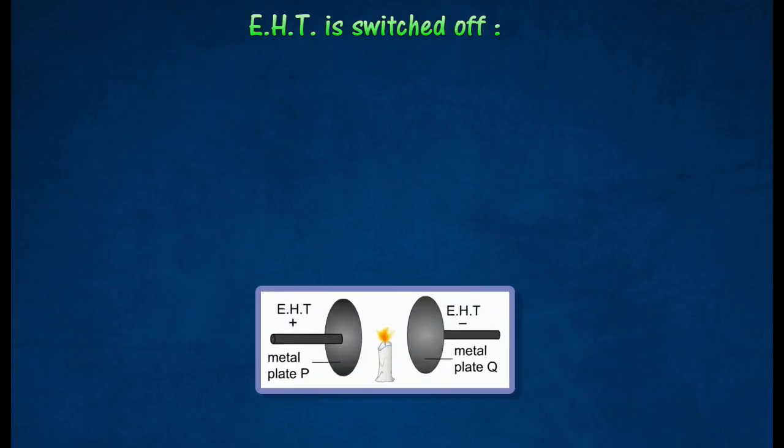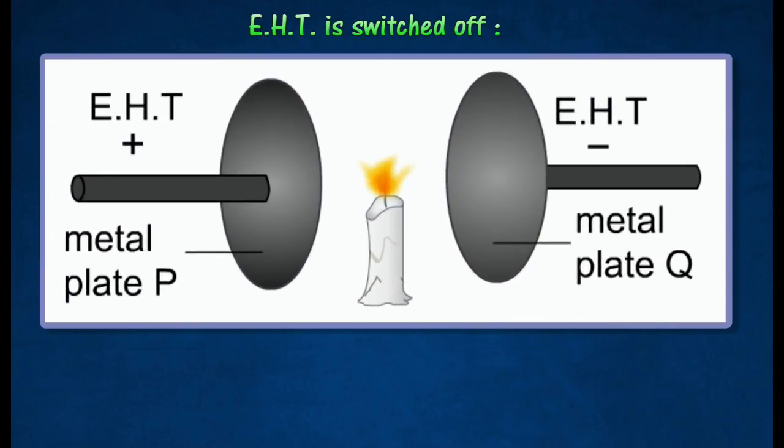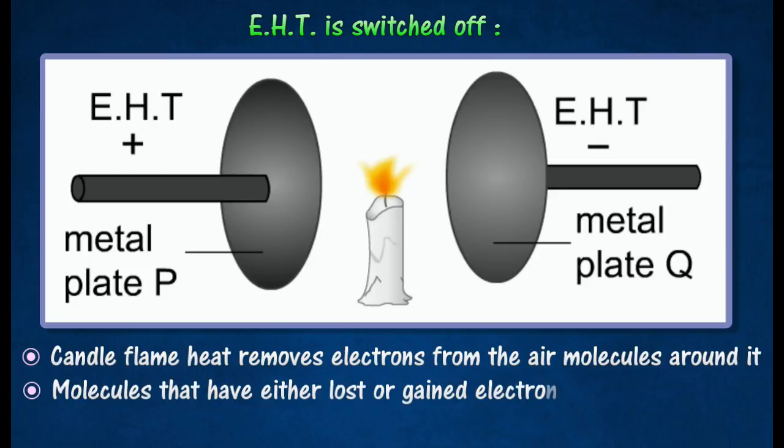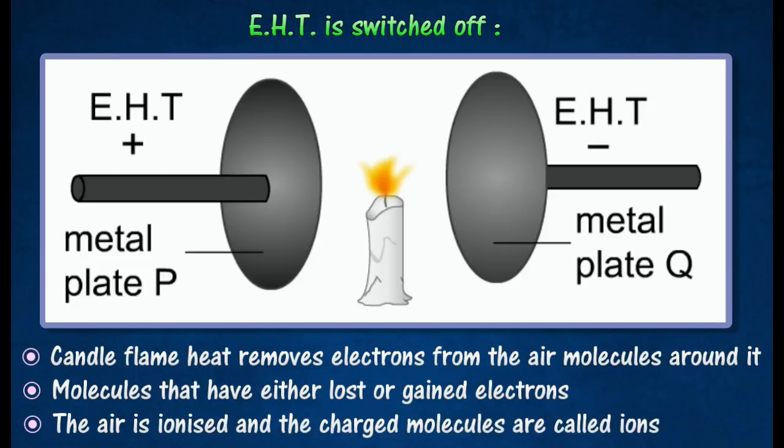A lighted candle is placed in between two metal plates P and Q. The heat of the candle flame removes electrons from the air molecules around it. Some of these electrons become attached to other molecules. As a result, the flame is surrounded by a large number of molecules that have either lost or gained electrons. When this happens, the air is said to be ionized, and the charged molecules are called ions.